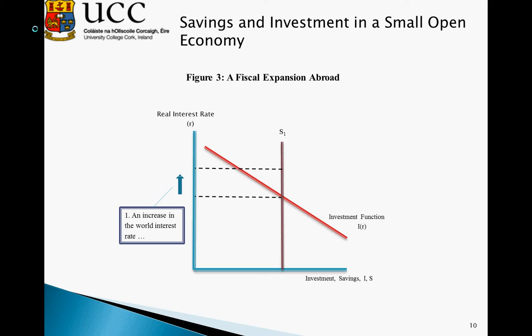For example, an increase in government expenditure in one of the world's largest economies reduces savings, and this pushes up the price of money — so we see the world interest rate rising. Once this rises, we see domestic savings is unaffected, so S remains at S1.